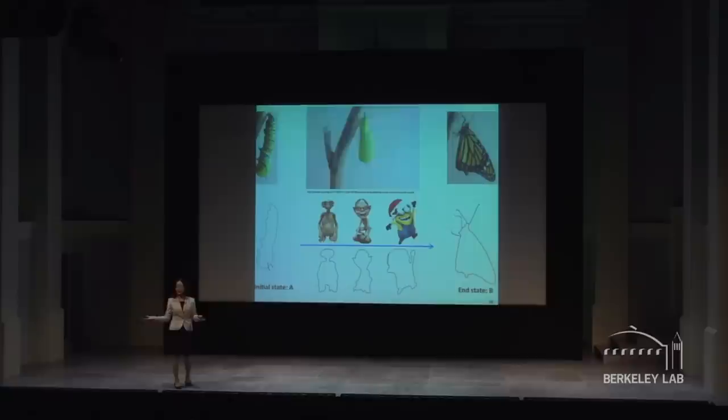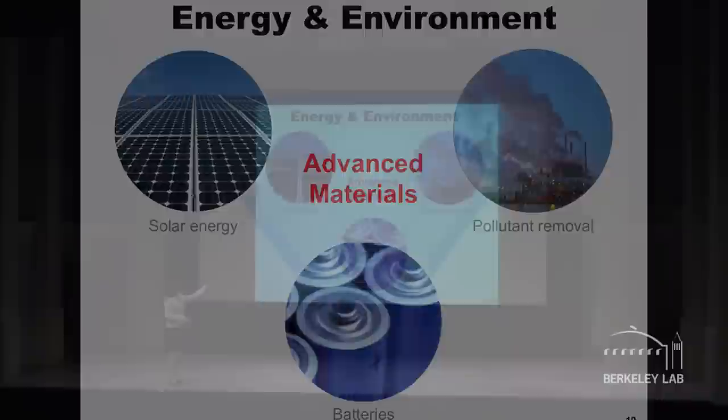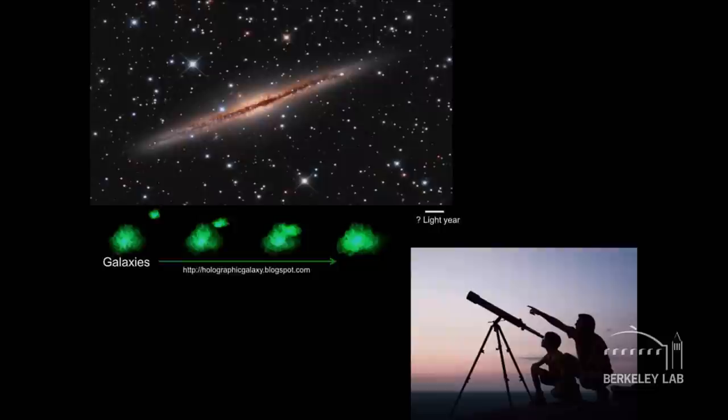In material science, there are full of processes that involve materials transforming from one state to another. To understand those problems, including the materials properties, it is important we study the materials transformations directly by direct observation. As a material scientist, I am interested in a variety of materials and materials processes in applications for sustainable energy and clean environment. I study materials at the atomic level.